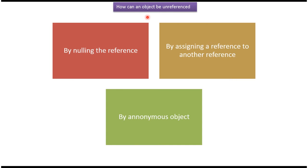In this video tutorial I will cover how to unreference an object. There are three ways we can unreference an object. The first one is by nulling the reference. The second one is by assigning a reference to another reference. And the third one is by anonymous object.